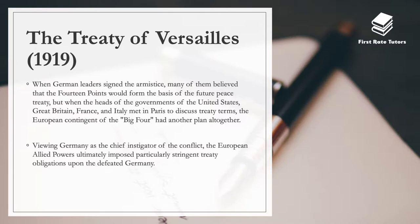Let's begin with the Treaty of Versailles, which was signed in 1919. This was the major treaty and it heavily punished Germany. It later influenced somebody like Adolf Hitler, who felt that Germany had been humiliated by the consequences of this treaty, and this is what really caused him to essentially start the Second World War.